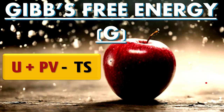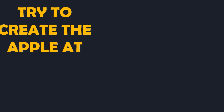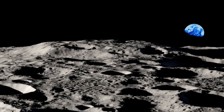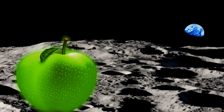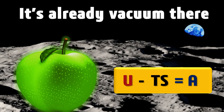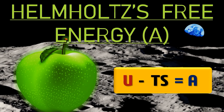Now, if you are working in a region of zero pressure — say you're an astronaut trying to create an apple after landing on the moon — the amount of energy you'll need is U minus TS, because you no longer need the pressure-volume energy; you don't have to create a space for the apple by removing air. This thermodynamic variable is called Helmholtz free energy.